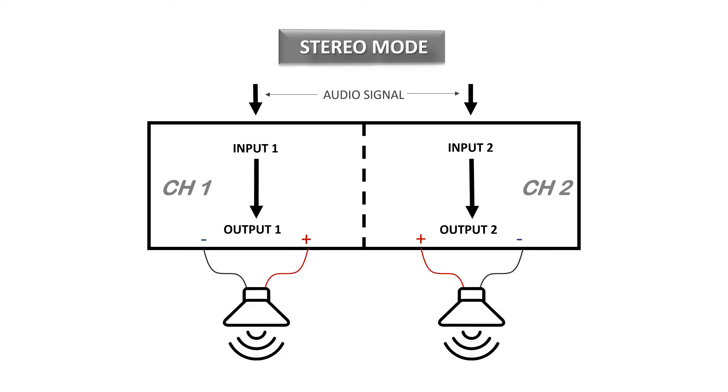Channel 2's input goes to channel 2's output with its own level control and processing. You can use channel 1 for your left main output while channel 2 is used for your right main output. Alternatively, you can use channel 1 for your front-of-house speakers and channel 2 for monitors. In a nutshell, you have two separate amplifier channels to use however you like.